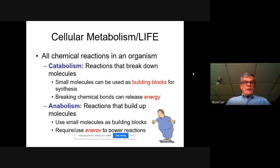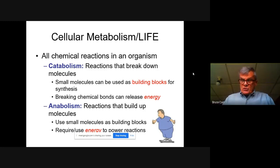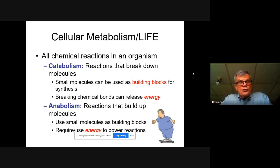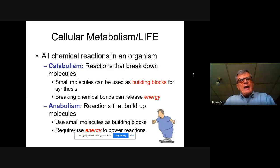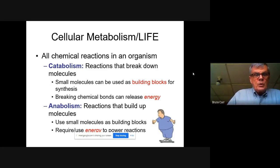We break metabolism down into two phases. The first is called catabolism, and that's important to us from an energy standpoint. Since we are consumers, our energy for life comes from the food that we eat — we cannot produce it directly from the environment. We have to eat the living material generated by other organisms, and the part where our food is broken down is the catabolic reactions of our body.